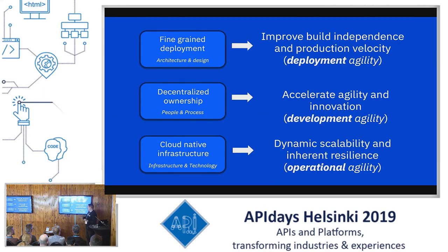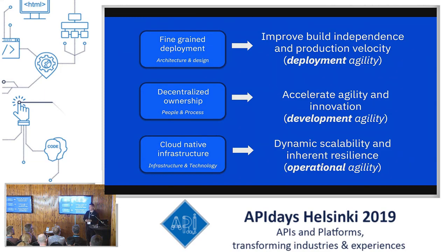Everything is typically backed up by a cloud-native infrastructure. Everything runs on containerized environments where the platform gives you elastic scalability of different components and built-in resilience, so downed services can pop up automatically, and orchestration can decide where it's best to run those components. That's operational agility - build once and deploy wherever it's best to run.